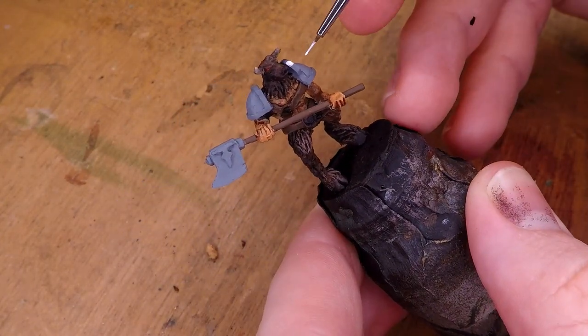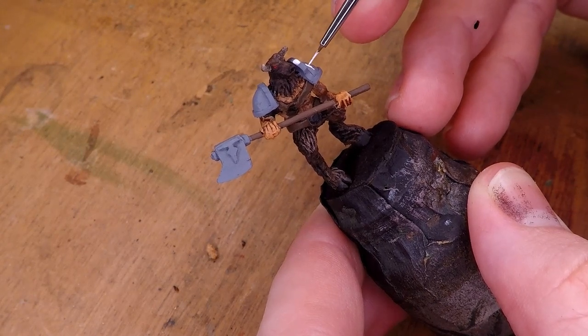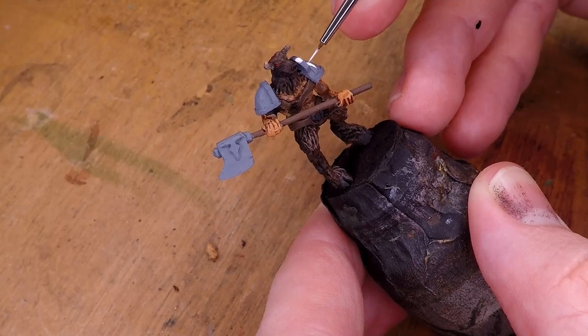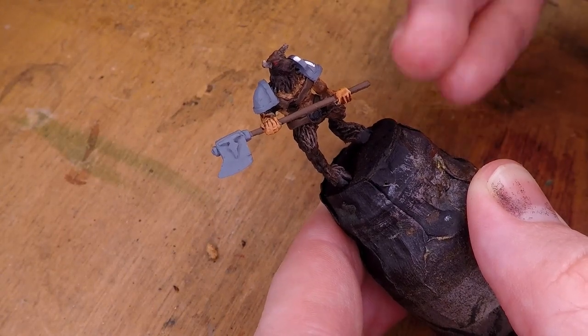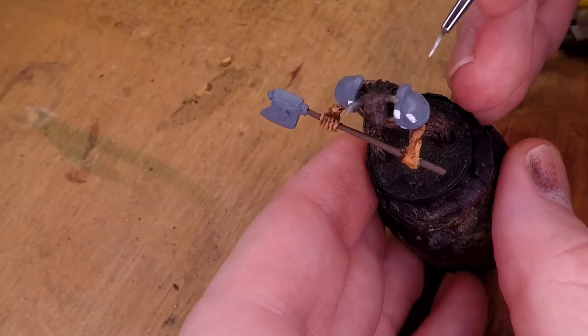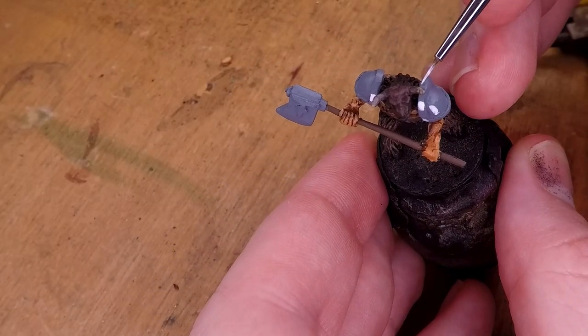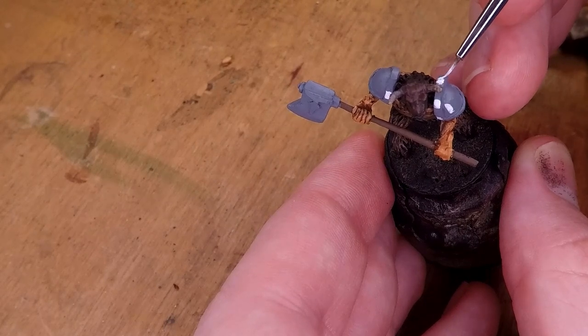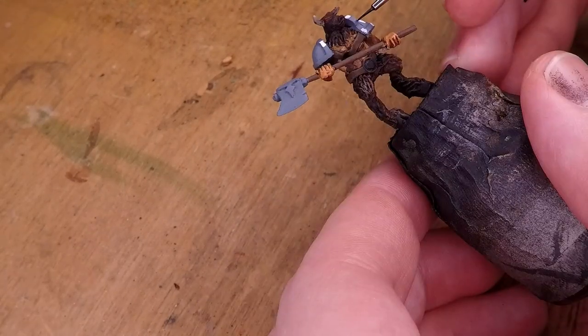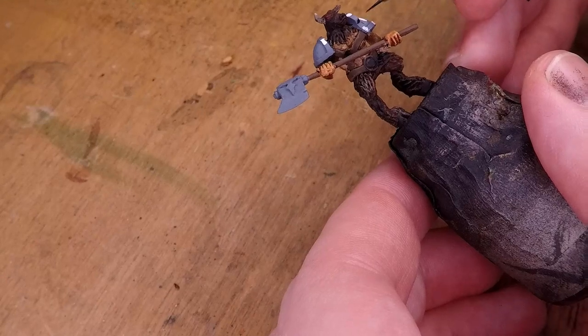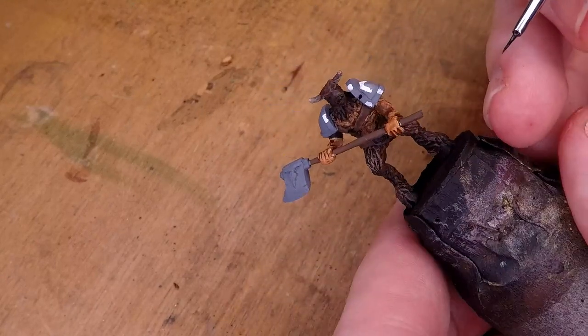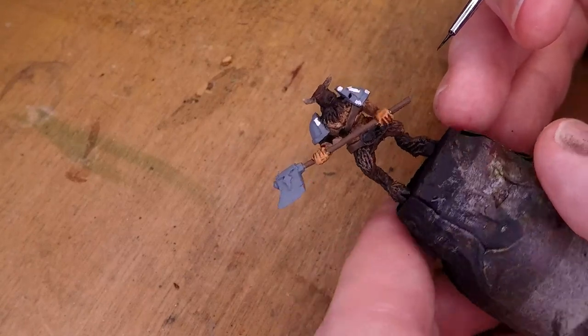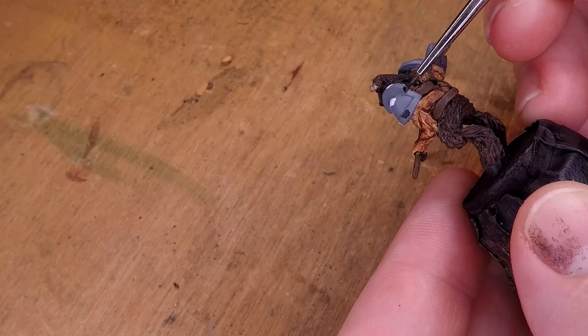The way that I determined where these highlights would go was by putting it underneath a lamp and seeing where the highlights were from the lamp, from the angle that I was looking at the miniature. And from what I understood of the few videos that I was watching, you want to take a couple different angles and paint on all the highlights for the several angles that you've chosen. And people will naturally be drawn to looking at the miniature from those angles because of the way you've done the highlights, assuming you've done that correctly.